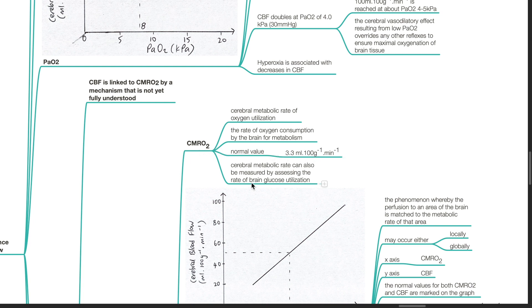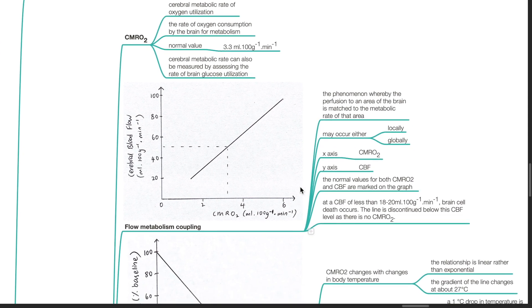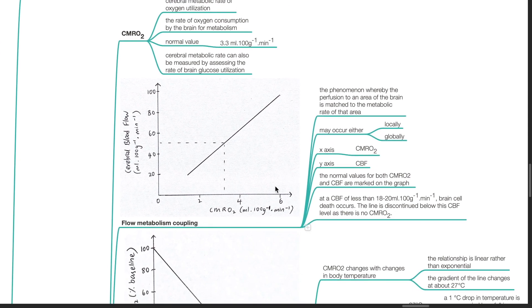Cerebral metabolic rate can also be measured by assessing the rate of brain glucose utilization. Flow metabolism coupling is the phenomenon whereby the perfusion to an area of the brain is matched to the metabolic rate of that area. It may occur either locally or globally.